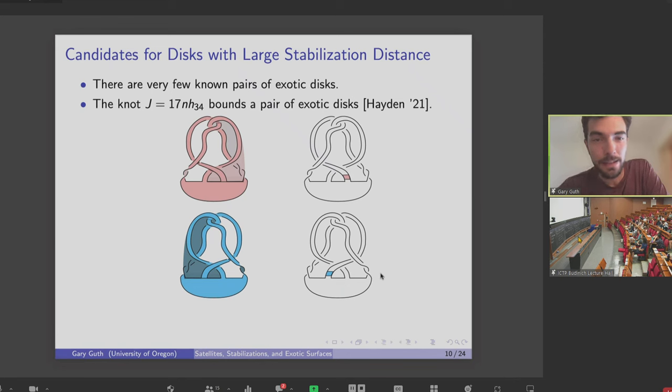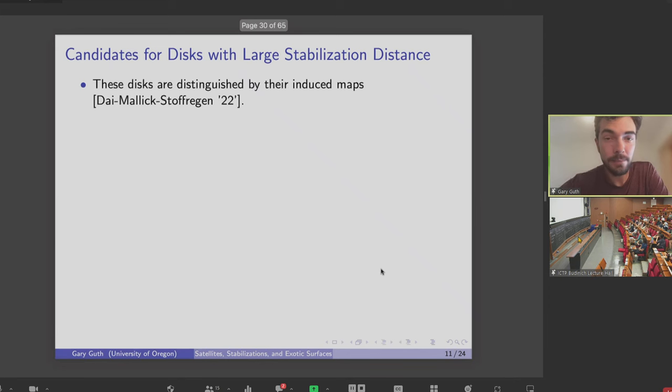So maybe the first thing to try is, well, one, can you compute the maps induced by these disks? And two, after you multiply by U, will the maps be the same? And it turns out that you can compute the maps induced by these disks. And moreover, they're distinct. So knot Floer homology can tell the difference between these two exotic disks.